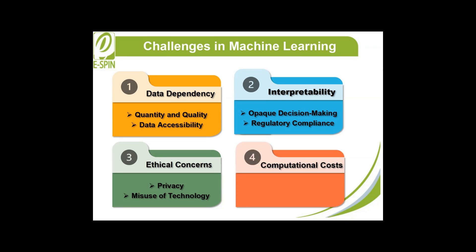Computational costs required to train and deploy machine learning models can be a significant barrier. Energy consumption: the computational power needed for training consumes significant energy, raising environmental concerns. Scalability: deploying machine learning systems at scale can be resource intensive, particularly in industries where real-time predictions are required.